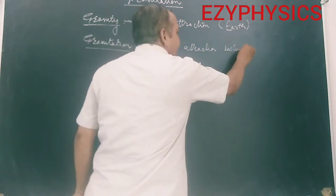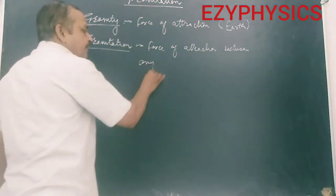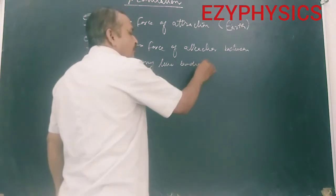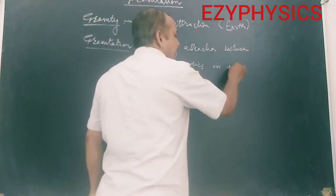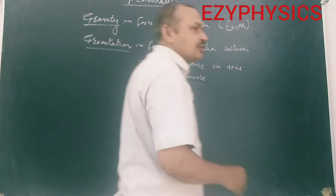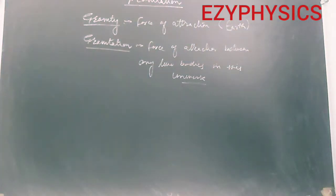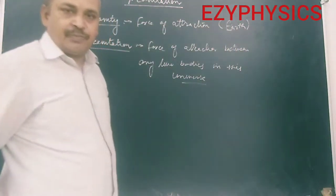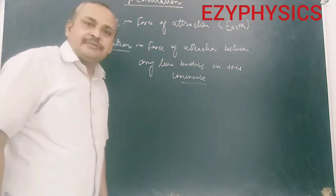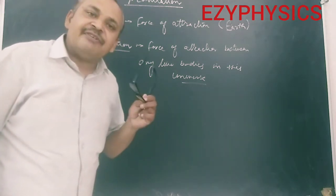Gravitation is the force of attraction between any two bodies in this universe. Whatever two bodies exist, the force of attraction between them is considered as gravitation. For example, the force of attraction between me and this blackboard, or between me and this fan — that is gravitation.